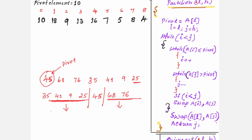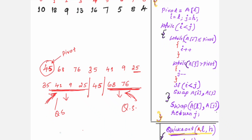Later, you apply the quicksort algorithm by dividing the array into two parts — the first part and the second part. You apply quicksort to the first part again, and quicksort to the second part. You keep dividing like this until you get one element in each array. Whatever single elements you get at the end will be in ascending order.